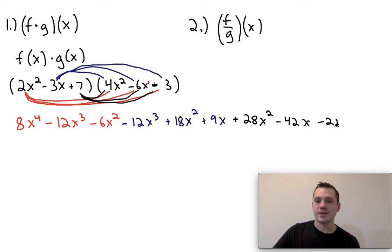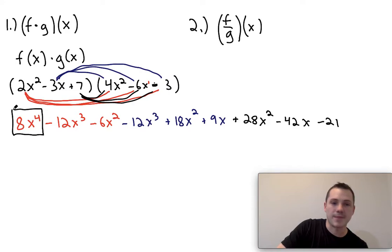Now what we want to do is go ahead and combine all the like terms. So what I'm going to do is I'm going to circle any term that has x to the fourth in it. Well we can see that there's only one term that has x to the fourth in it, so there's really nothing to combine here. So this is just going to be 8x to the fourth.